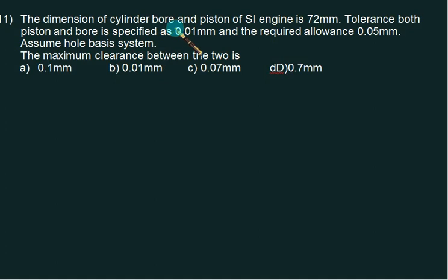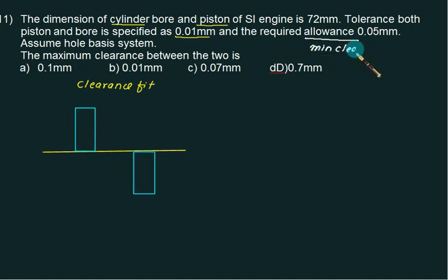The dimensions of cylinder bore and piston of SI engine is 72 mm. Tolerance on both piston and bore is specified as 0.01 mm and the required allowance is 0.05 mm. Assume hole basis system and then you have to find out the maximum clearance. Remember it's a cylinder and bore piston, it means that we want a clearance fit. The basic size is 72 and tolerance on both is 0.01. So cylinder and piston basically stands for clearance fit. Now since clearance fit, the tolerance band of the hole is naturally more than the shaft. Remember allowance is minimum clearance in case of clearance fit.